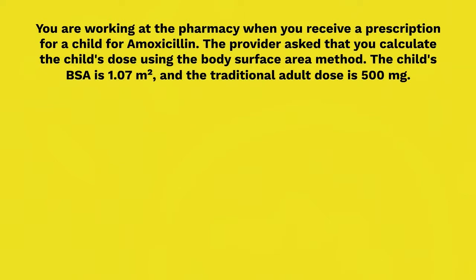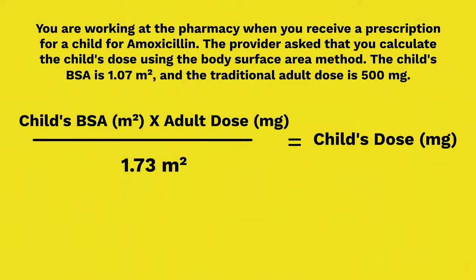Once again, you're back at the pharmacy and receive another amoxicillin prescription. The provider asks that you calculate the child's dose using the body surface area method. The child's BSA is 1.07 meters squared and the traditional adult dose is still 500 milligrams. We need the child's BSA and the adult dose, both of which the question gives us. Pause the video and try to solve this problem using the body surface area method.